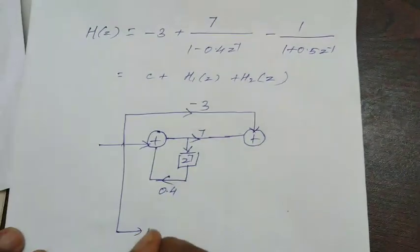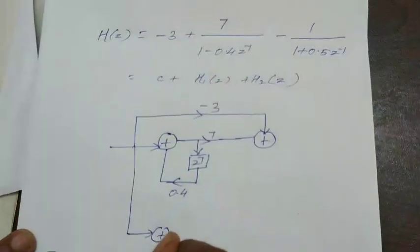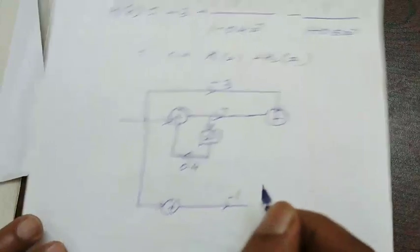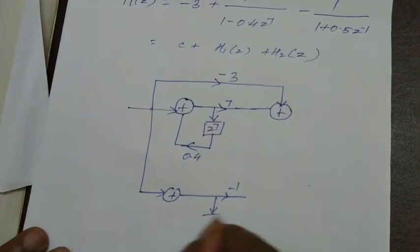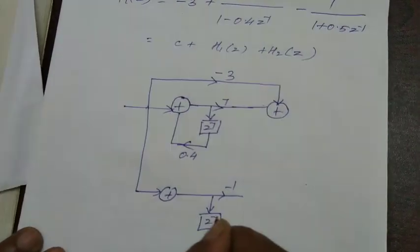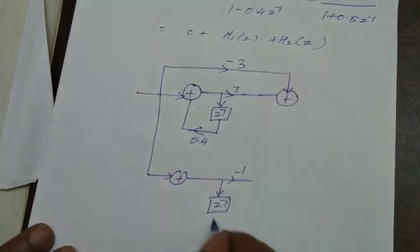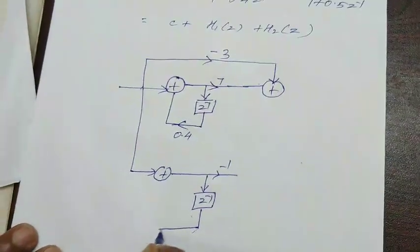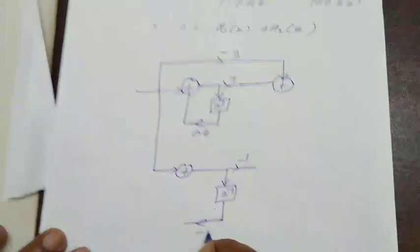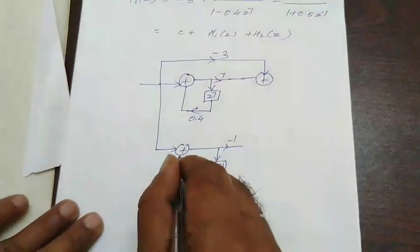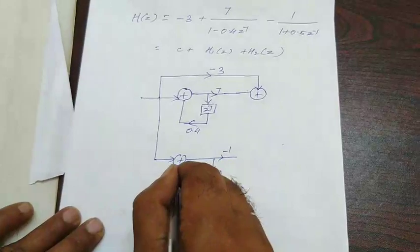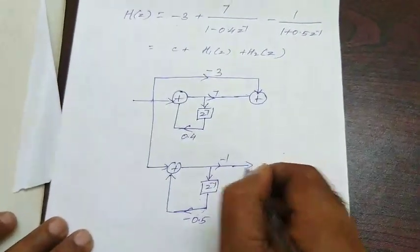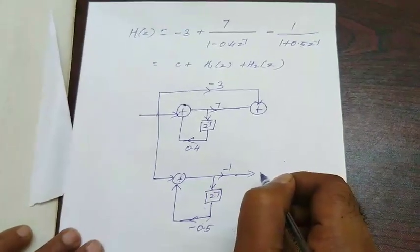Here, again you are having an adder and you are having a constant value minus 1 here. Here is a delay in direct form 2 realization you are having a delay and denominator you are having plus 0.5 since it is going opposite direction you put minus 0.5. These two are connected together and here also you fix one adder.